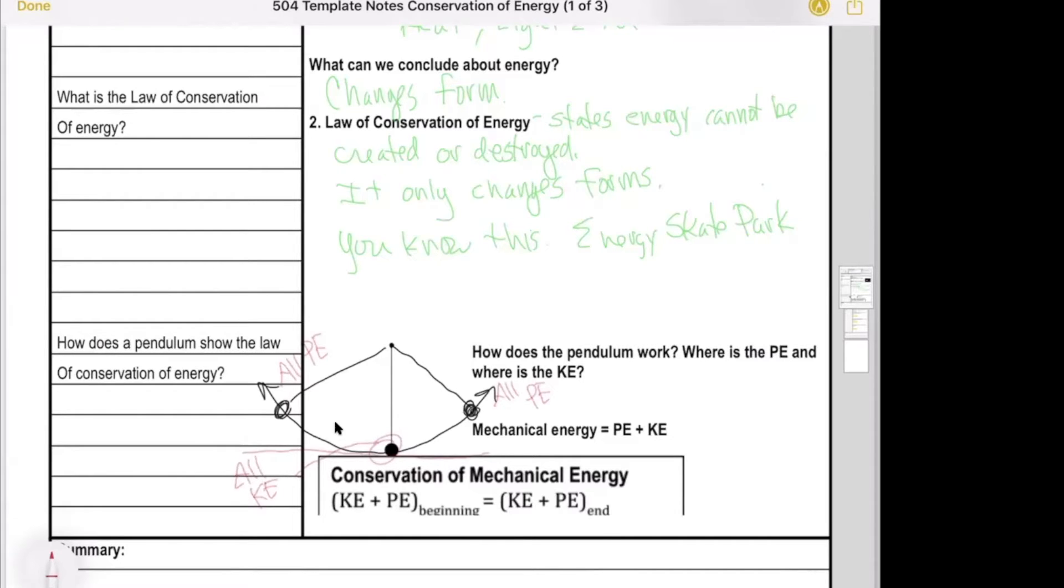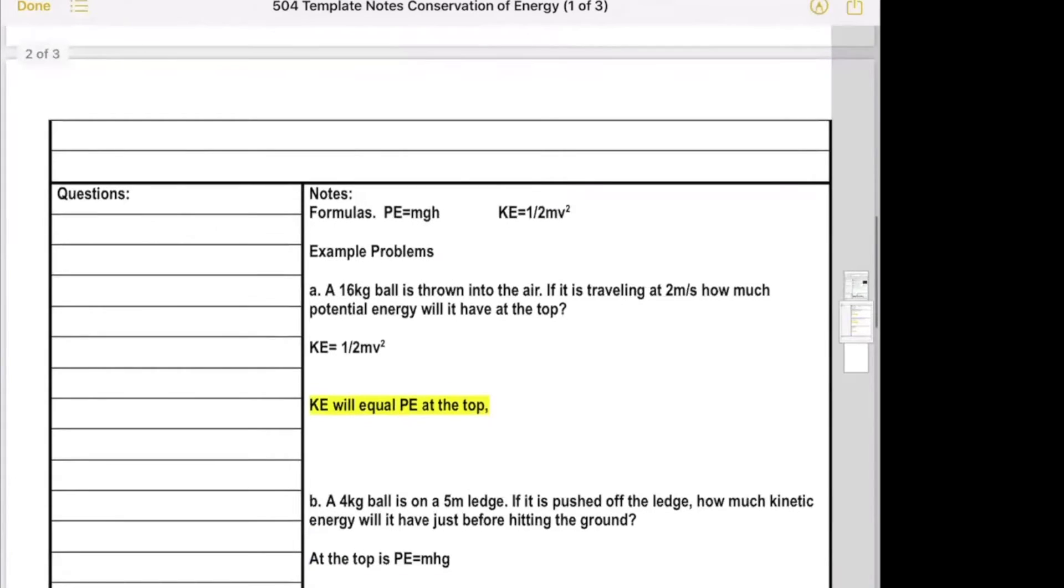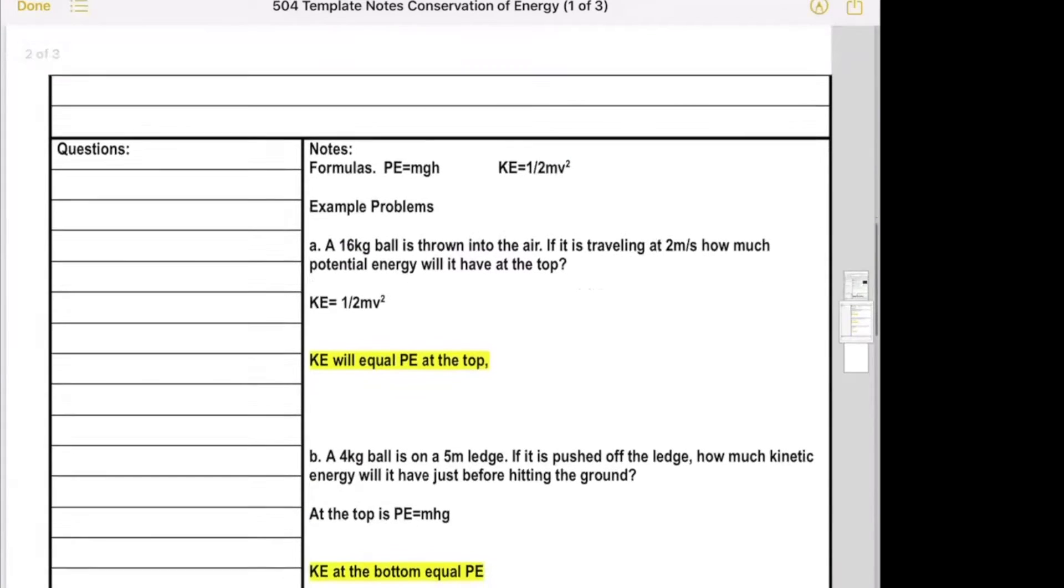The combination of kinetic and potential is called mechanical energy, or total energy. The bar on the energy skate park that was blue, that said total energy, mechanical energy, total energy. It's really the same thing. The formulas on the next page you worked with these or you're going to work with them very soon.